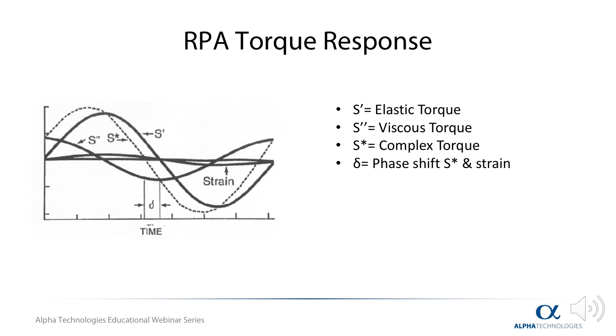S prime is the elastic response of the material or the solid response, while S double prime is the viscous or liquid response of the material. Delta, shown near the bottom, is the phase shift between the measured complex torque, S star, and the applied strain. This curve is the most straightforward way to separate the viscous loss component from the solid or elastic component.